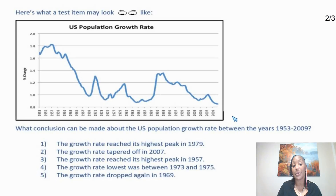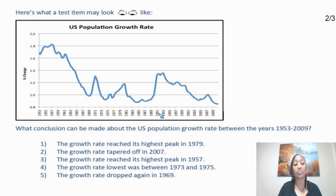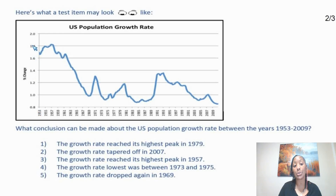When you look at the very bottom of the chart, you also see a range of years. Looking at the left of the chart, we see 1953, so this chart begins with the year 1953 and runs through 2009, which is on the right side of the chart. On the left side of the chart, you also have percentage change along with a range of numbers. The percentage change on this graph fluctuates from 0.8 onward to 2.0.